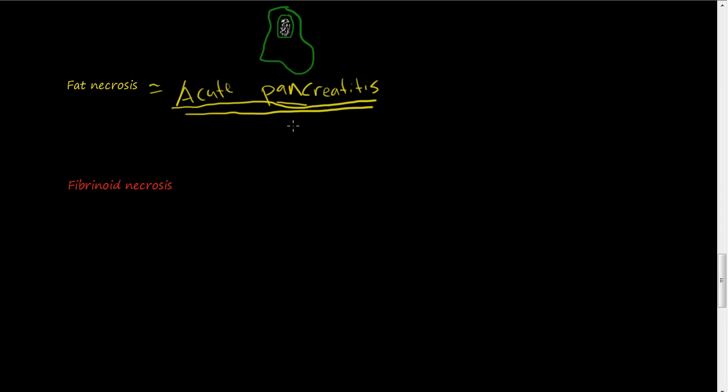You can Google pancreatitis or we'll discuss this pathology later in specifics. But acute pancreatitis is usually associated with fat necrosis. And what happens is activated pancreatic lipases from the acinar cells in the pancreas, they leak out.